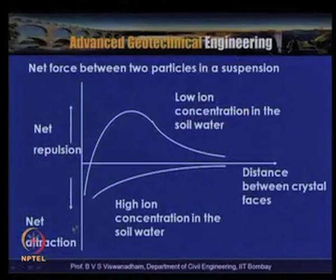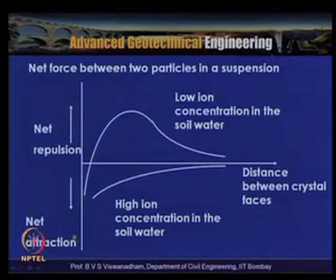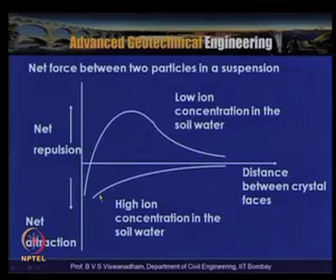When net force is attraction the groups of particles settle together — flocculation. Low ion concentration in soil water produces net repulsion; high ion concentration produces net attraction. This environment creates two different types of clay soil structures: flocculent and dispersed structures.